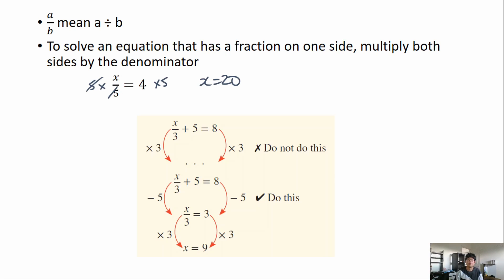Another example: x over 3 plus 5 equals 8. You might think we multiply by 3 first because of BODMAS — division and multiplication come first. But in equations like this we always go from the stuff that is furthest from the x first. So we get rid of the +5 first and then the denominator. Our first step would actually be to subtract 5, giving us x over 3 equals 3.